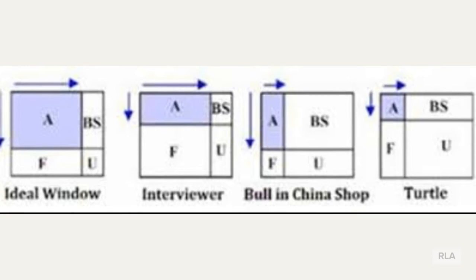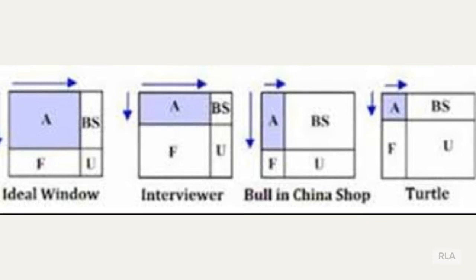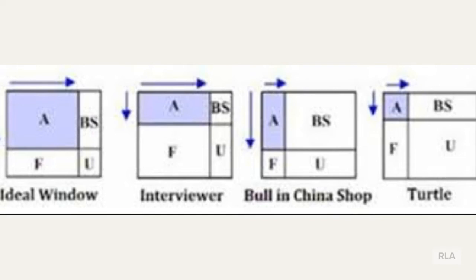The next type of Johari Window is the bull in the china shop. They have a huge blind area because they're not very interested in receiving feedback, nor are they going to ask for it. They have a small hidden window because they're always sharing their opinions — they want you to know what they think and about them. The final Johari Window is called the turtle because they are in their shell. They really don't disclose any information about themselves and they really don't want you to tell them anything about themselves.